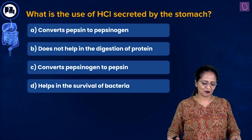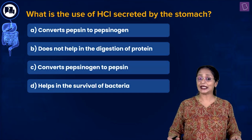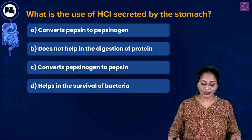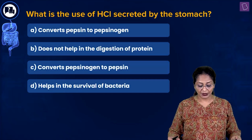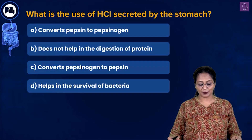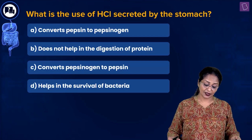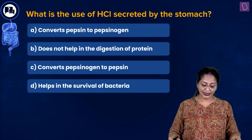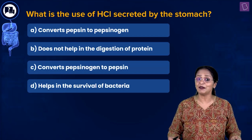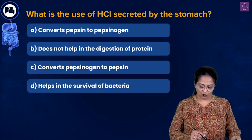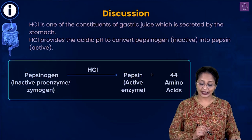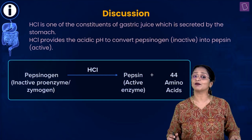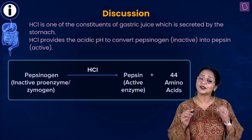Let us now look at this question: what is the use of HCl secreted by the stomach? A: converts pepsin to pepsinogen, B: does not help in the digestion of protein, C: converts pepsinogen to pepsin, or D: helps in the survival of bacteria.